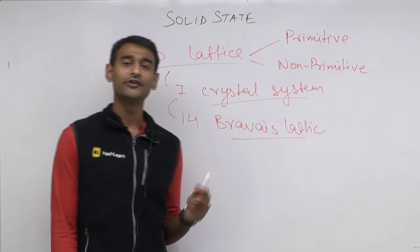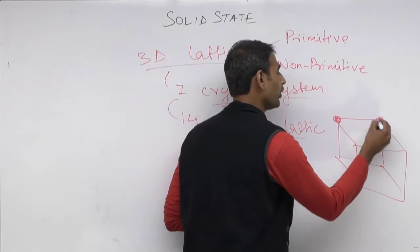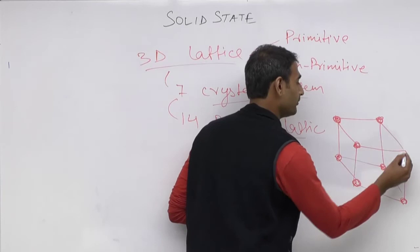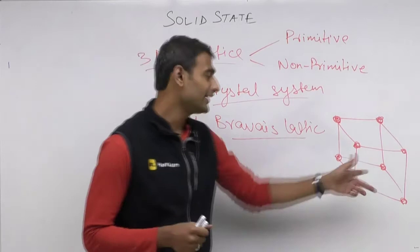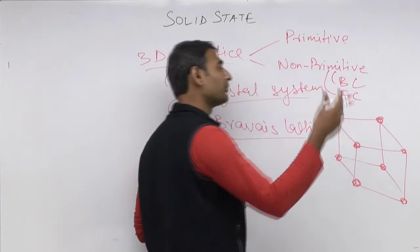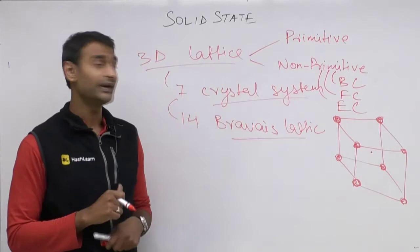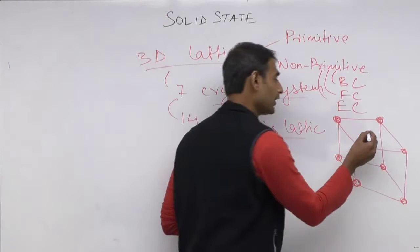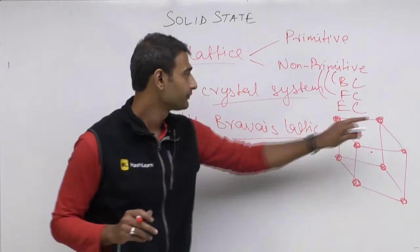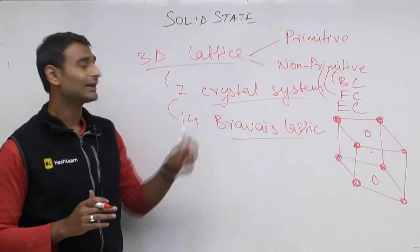A primitive unit cell has atoms only at the corners. A non-primitive unit cell has three variations: a body-centered unit cell — one atom at the body center where the body diagonals meet; a face-centered unit cell — each of the 6 faces has an atom at its center; and an edge-centered unit cell — atoms are present at only two opposite faces.